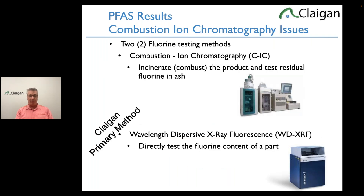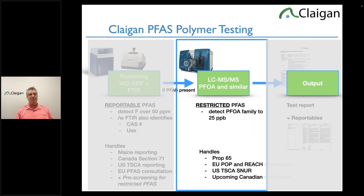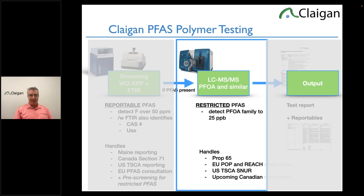We use WDXRF as the first level for fluorine screening. We use LC tandem mass spec (LC-MS/MS) for the PFOA family and similar compounds, down to 25 parts per billion. Theoretically we can test lower, but false positives are a bit high at that point and sample prep becomes an issue. So we call it 25 parts per billion, which is the regulated limit. This is to find the low-concentration non-polymer PFAS that's really not supposed to be there — about 1% of intentional uses.